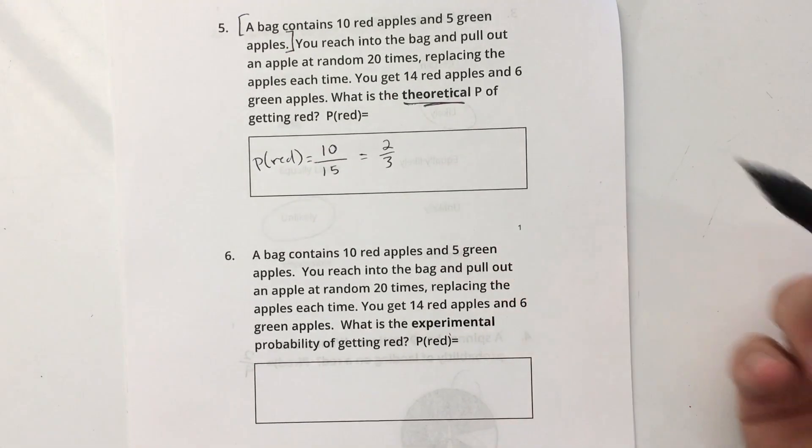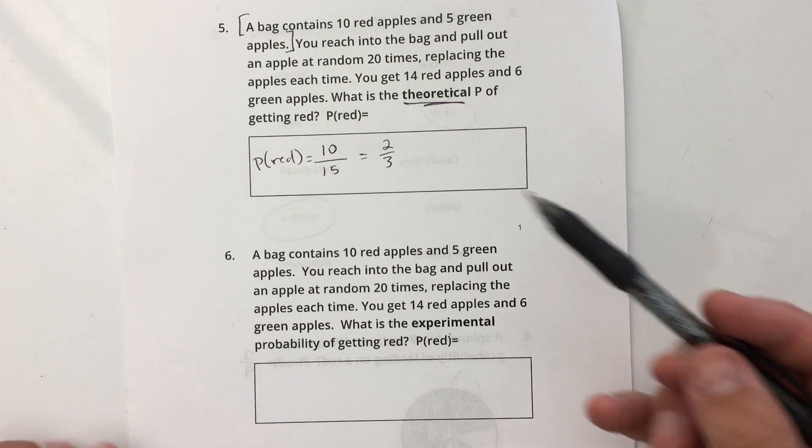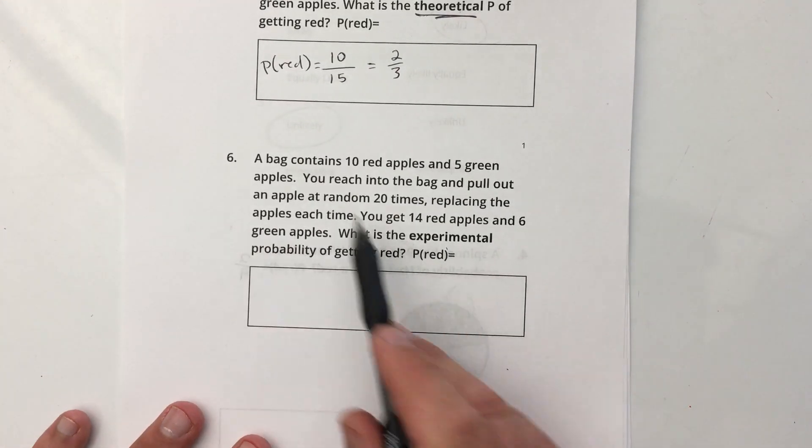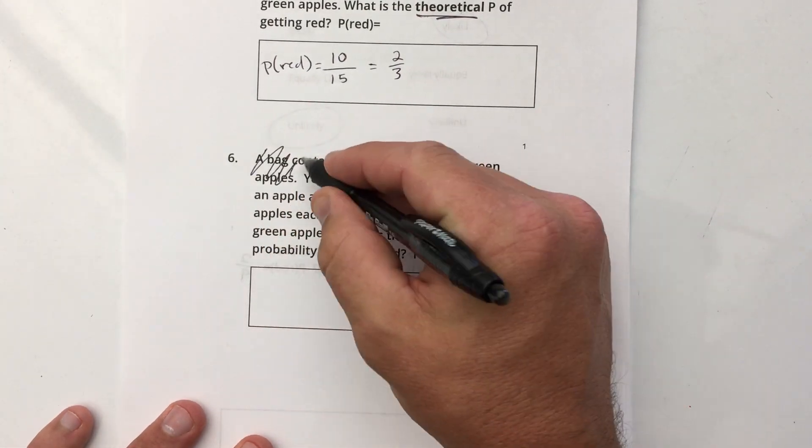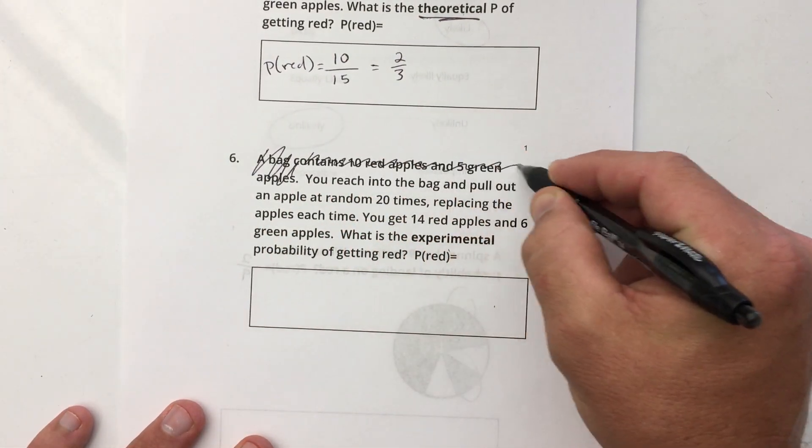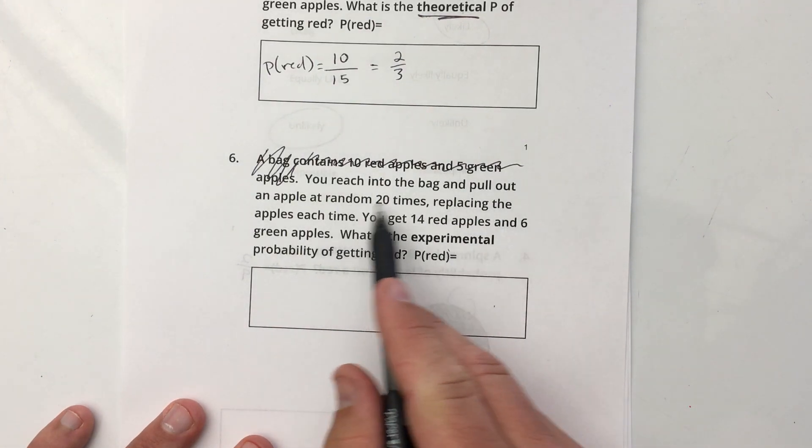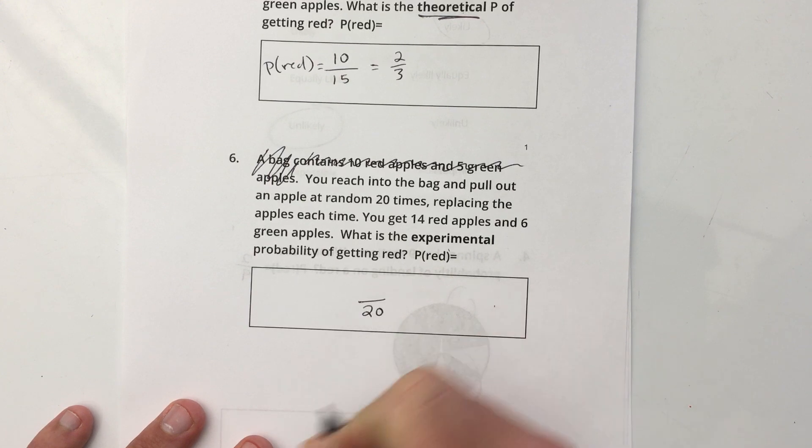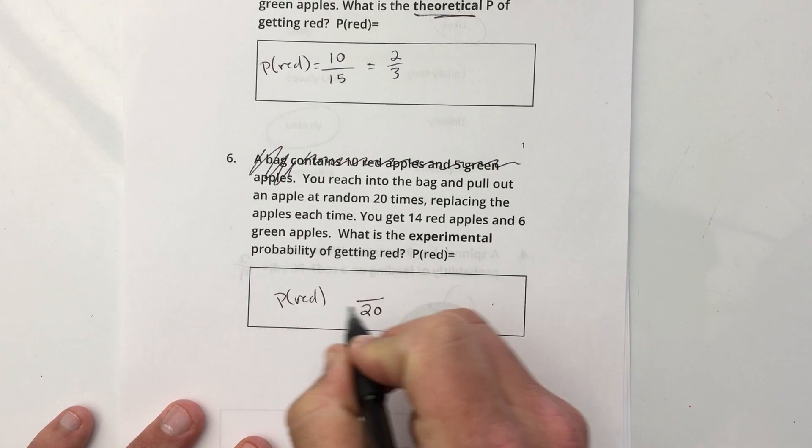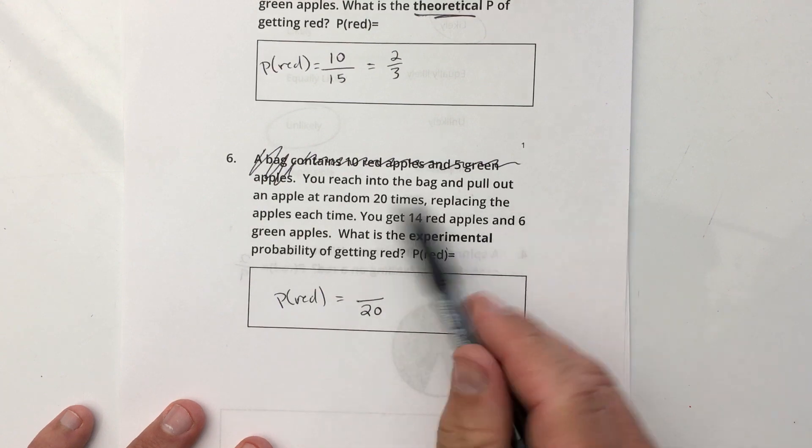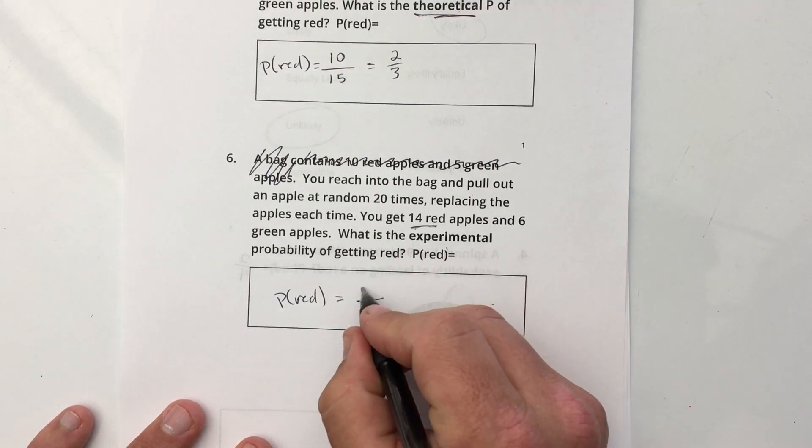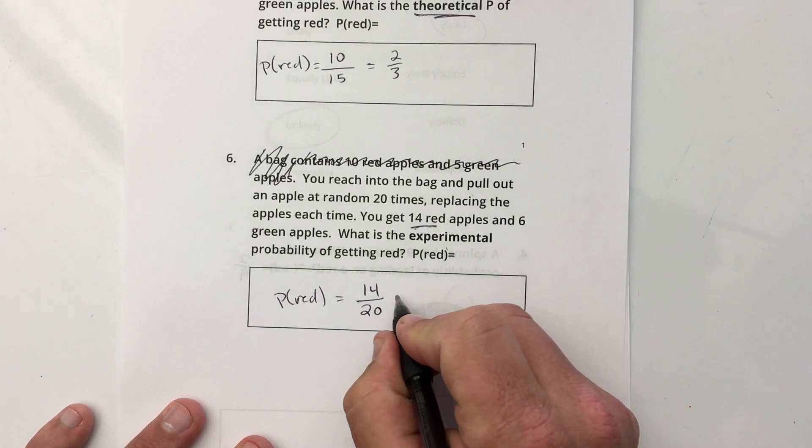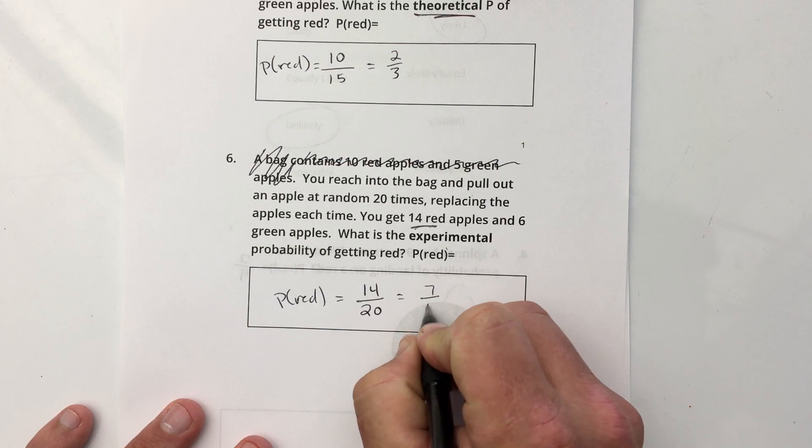You could also simplify to 2/3. Also, just leave this as a fraction. You can answer it in a percent or decimal, but fraction is going to be the easiest way. Okay, so now, same scenario. I can ignore this first sentence because I know that's theoretical. And now I have experimental. I pull out an apple at random 20 times. So I already know that's going to be my denominator. That's how many times I did the experiment. I replaced the apples each time, which is important. I got 14 red out of 20. So my probability is 14/20 or 7/10.